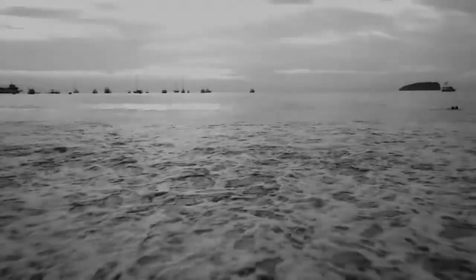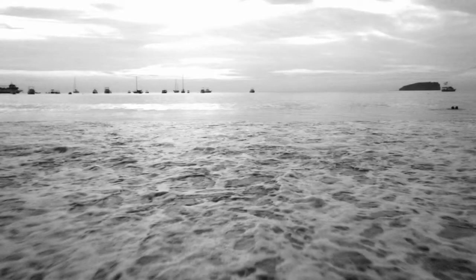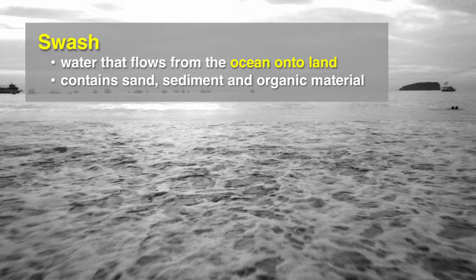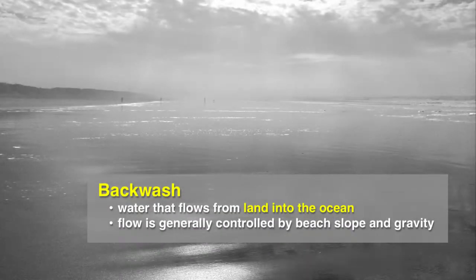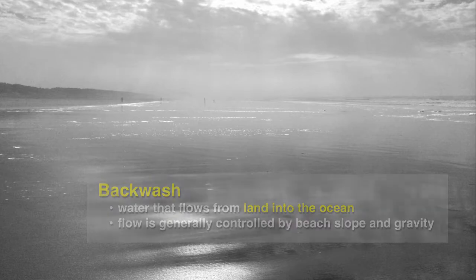Let's start with swash and backwash. Swash is really the water that flows from the ocean onto the land. It contains sand, sediment, and organic materials such as shells or bits of bones or scales. Backwash is the water that flows from the land back into the ocean and it's controlled by a beach slope and gravity. This water can also be freshwater from rivers or runoff.